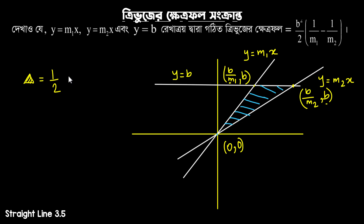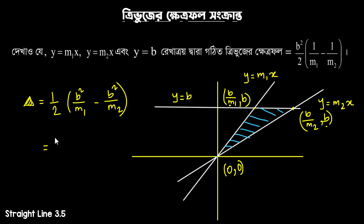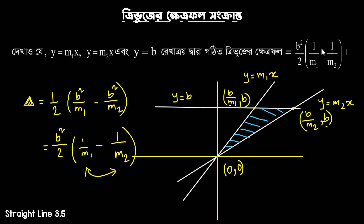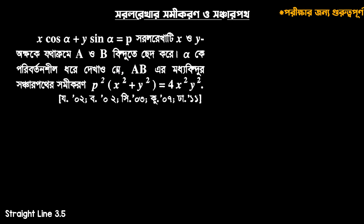B² divided by m1 minus B² divided by m2. So B² is not enough, divided by 2. So: 1 by m1 minus 1 by m2. This is the answer. This is the answer to the next step. Let's prove it — it's the actual proof. The answer is negative. So we will take the answer to the next step. Let's see the correct type. Let's prove it. Chapter 3.5 is the beautiful math.